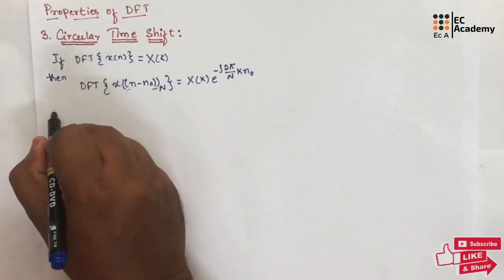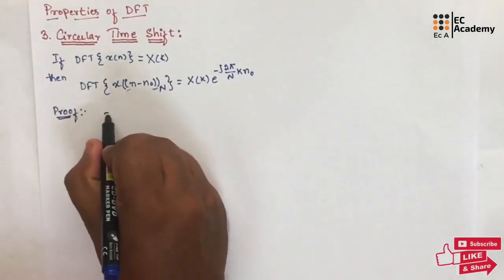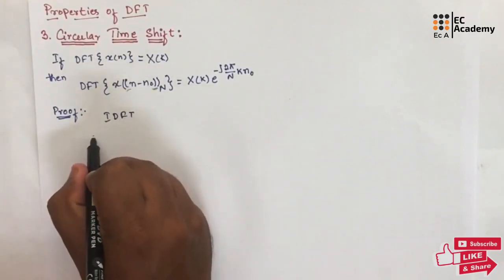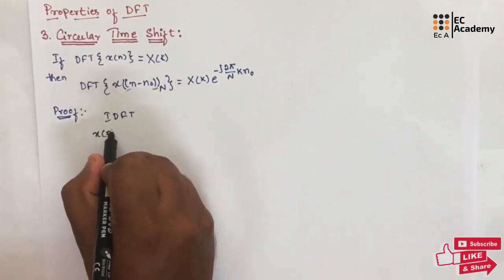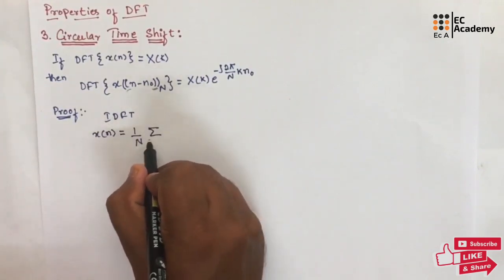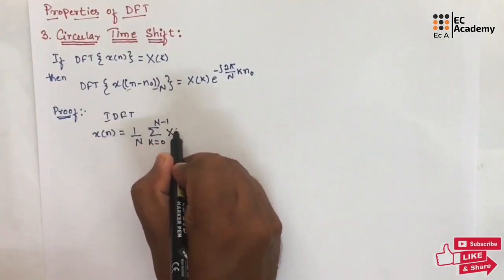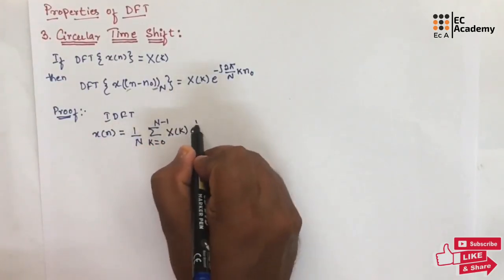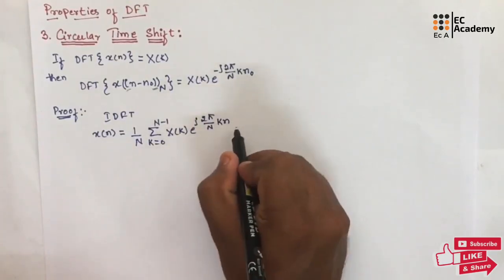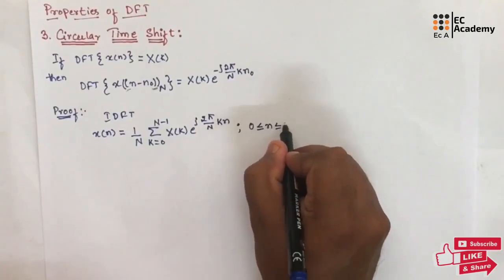Let us prove this. We know the IDFT of a signal can be given as: X of N is equal to 1 by N, summation of K is equal to 0 to N minus 1, X of K, e to the power of j 2 pi by N into K N, for N value ranging between 0 to N minus 1.